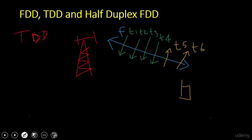In TDD, the same unpaired spectrum is used at different times for either uplink or downlink. You cannot have both uplink and downlink at the same time — there is no duplexing involved. One advantage of TDD is lower cost, because there is no need for a duplexer since UEs do not process both uplink and downlink simultaneously.